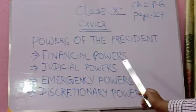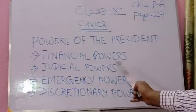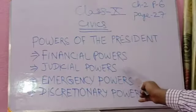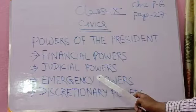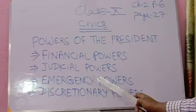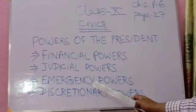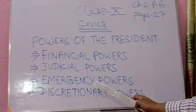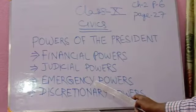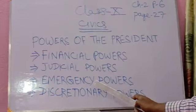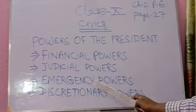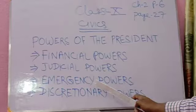Next is the judicial power of the president. The President of India has the following judicial powers. The first is the power to grant pardon or reprieve — the president has the power to grant pardon, to remit or suspend the punishment or sentence, or to appeal for mercy. He can grant pardon in the following situations.